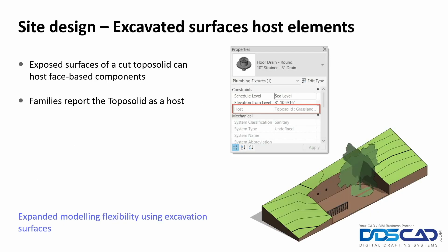Now we come to site design: Excavated Surfaces Hosting Elements. This means you can bring in a face-based family onto exposed surfaces of cut topo solids. For example, a tree or a railing can be hosted on the exposed excavated area. The family itself will also tell you who is hosting it — such as the topo solid — as shown here in the properties.